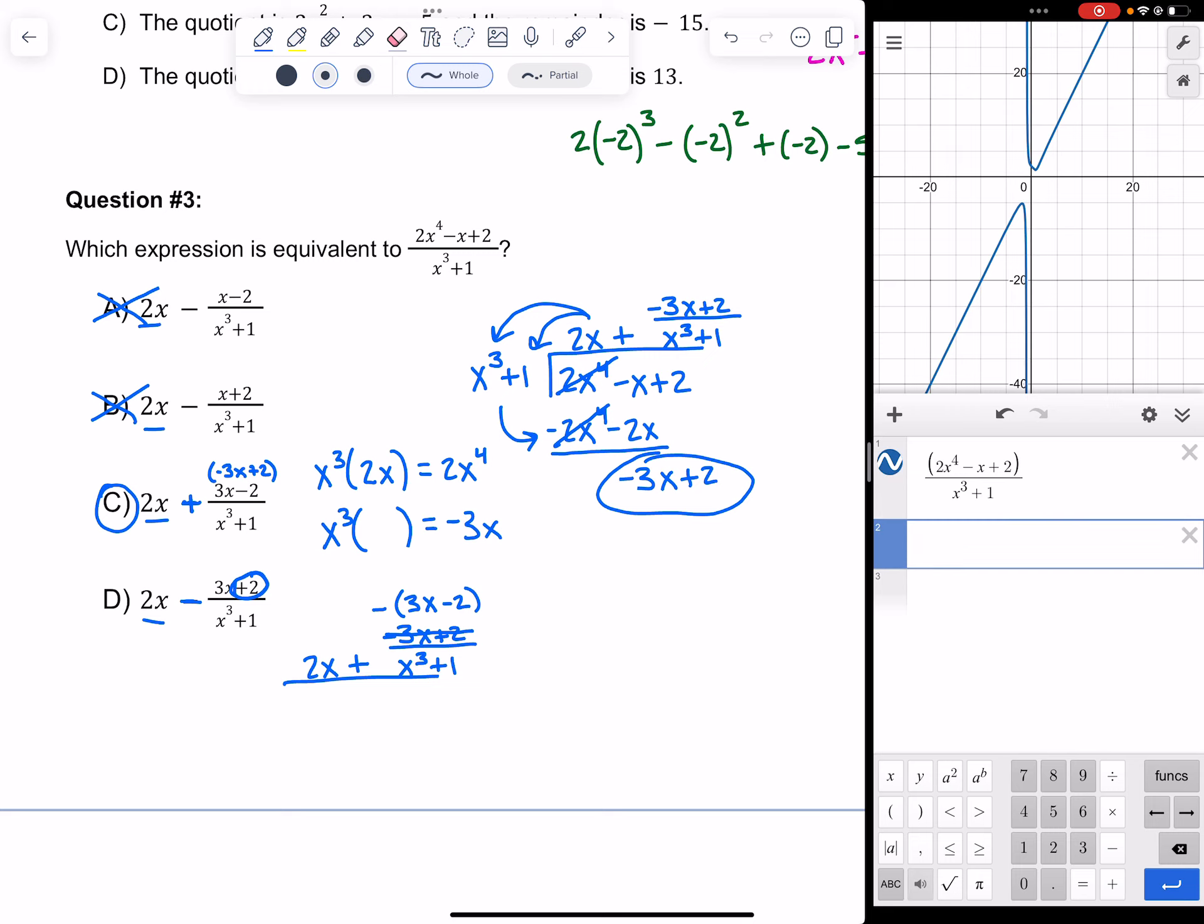I know my answer is C, so I'm just going to type that one. Let me put it back the way they had it. It was 2x minus, and then I'm going to put 3x minus 2 in parentheses, so I can divide it by the x cubed plus 1. And I noticed my graphs line up.